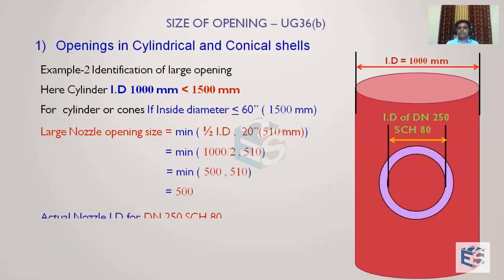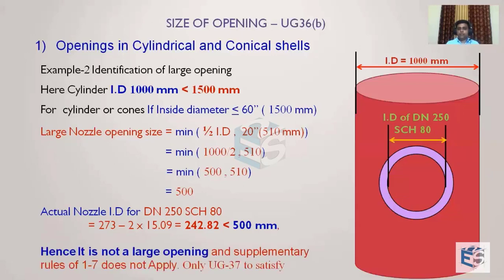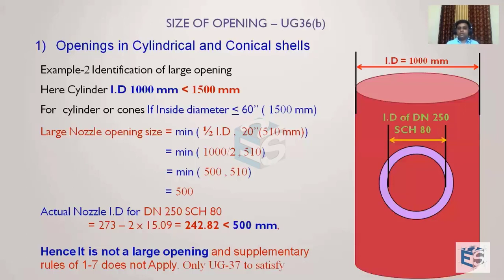To find the actual ID of DN250 Schedule 80: ID = OD − 2 × nominal thickness = 273 − 2 × 15.09 = 242.82mm. Since 242mm is less than 500mm, this is not a large opening. Therefore, supplementary requirements of Appendix 1-7 do not apply; only UG-37 needs to be satisfied for the reinforcement requirement.